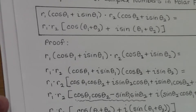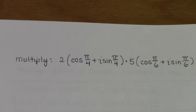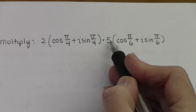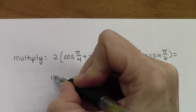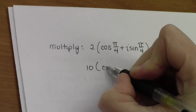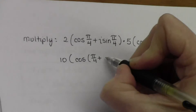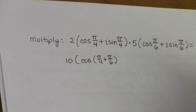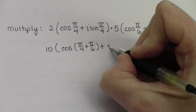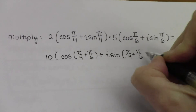One example — this is much easier to do than to prove. I have two specific complex numbers in polar form, and I'm going to multiply them using the law of multiplication we just proved. The first thing is to multiply the r values: 2 times 5 is 10. The next thing is to add the angles, because that's what we proved. So it's going to be cosine of (π/4 + π/6), plus i times sine of (π/4 + π/6).